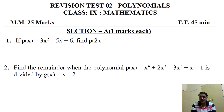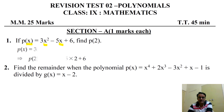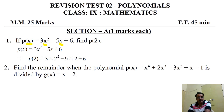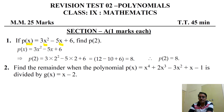If p(x) = 3x² - 5x + 6, find p(2). What we have to do is substitute the value x = 2. So 3 × 2² = 12, minus 5 × 2 = 10, so 12 - 10 + 6 = 8. Therefore p(2) = 8.